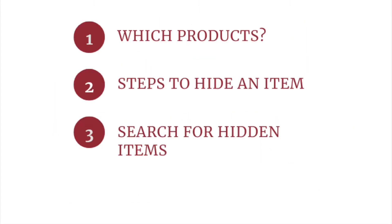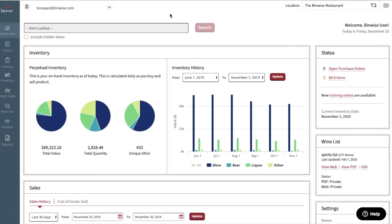The item will no longer be visible in your ordering, inventory, or sales window. To hide an item, it must have a zero count. This will ensure that active items are not hidden by mistake. We also recommend that items are hidden immediately after you take inventory to allow for the most up-to-date counts.